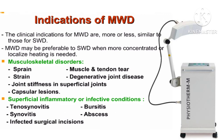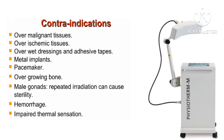Next are the contraindications. It should not be used over malignant tissue, as it enhances metabolic activity and circulation, which can spread malignancy. Other contraindications include over ischemic tissue, excessive edema, wet dressings, and adhesive tape. It should not be applied over epiphyseal areas in growing children as bone growth may be retarded. It should not be used over the gonads as it can produce sterility, over hemorrhagic areas, or in cases of tuberculosis in joints as infection can develop. Additional contraindications include impaired thermal sensation, unreliable patients, and the eyes.